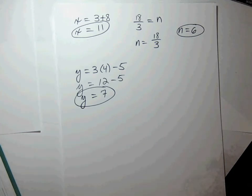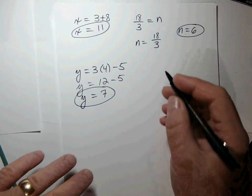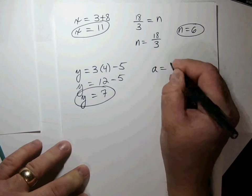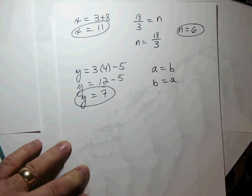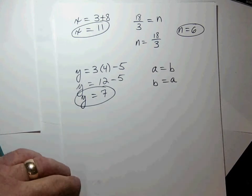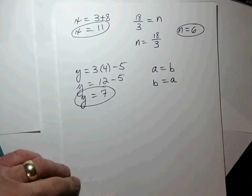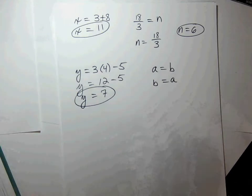There are properties of symmetry and equality involved with an equation. If a equals b, that's the same thing as b equals a. We've always known that — if one thing equals another, I can turn it around and read it backwards and they're still equal.